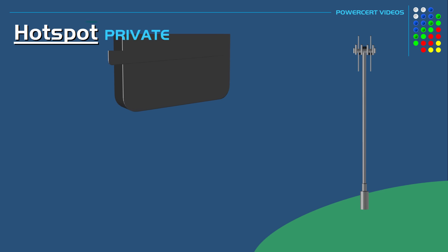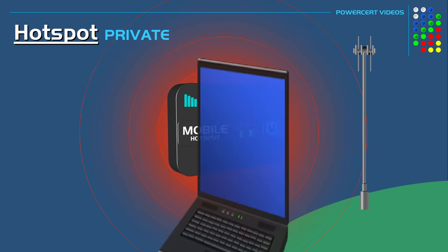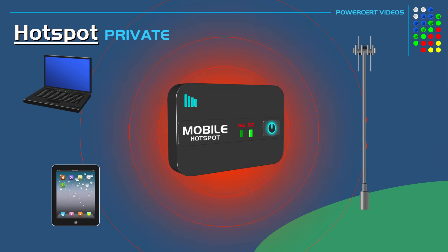Another method of connecting to the internet is by using a mobile hotspot. A mobile hotspot is a portable device that uses cellular networks to connect wireless devices to the internet. If there are wireless devices within 30 feet of a mobile hotspot, they can join it and have internet access. Mobile hotspots come in two different forms: either a freestanding device like you see here, or as a feature built into your smartphone.